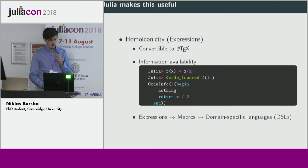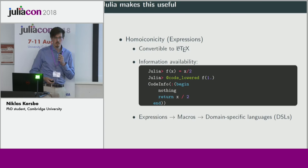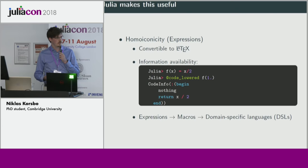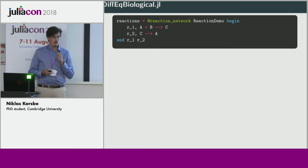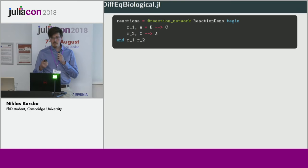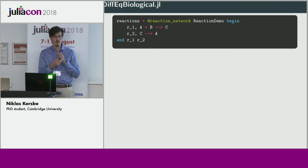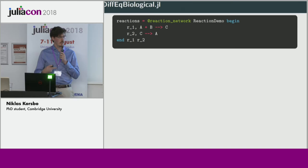Another nice thing with expressions is that you can manipulate them and evaluate them — this is what makes macros so powerful in Julia. With these macros, a lot of people have created very good domain-specific languages for specific purposes. One of them is from DiffEq biological, and there's actually a talk on this on Friday. Essentially this allows you to input a model in chemical arrow notation — so you're modeling chemical interactions using an arrow notation, and the macro will parse this input and translate it into something that Julia can use.